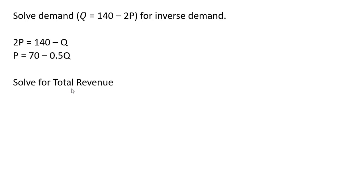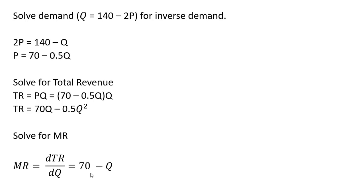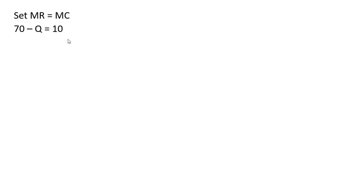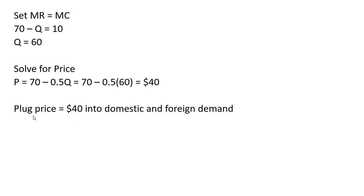We get total revenue by plugging in 70 minus 0.5Q for P and simplifying. Taking the derivative, marginal revenue is 70 minus Q. Setting marginal revenue equal to marginal cost of $10, the quantity is 60. Plugging 60 into the inverse demand for the total market — 70 minus 30 — we get a price of $40.